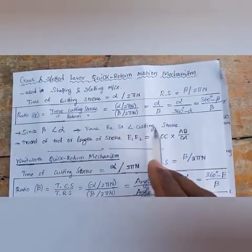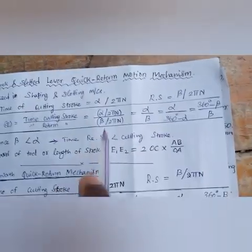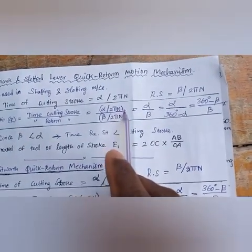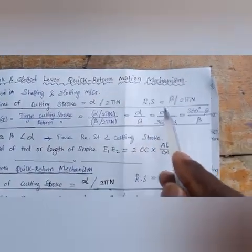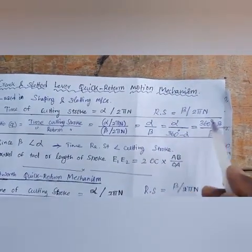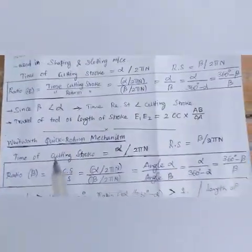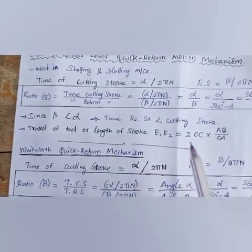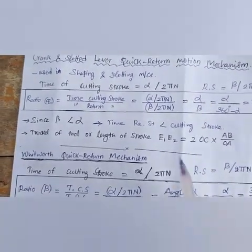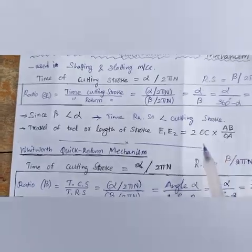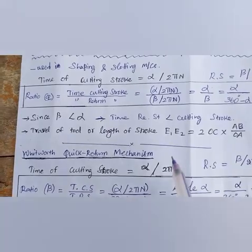The ratio of time of cutting stroke to time of return stroke equals alpha divided by beta. Also, alpha divided by (360° minus alpha) equals (360° minus beta) divided by beta. The length of stroke (travel of tool) E1E2 equals 2 × OC × AB divided by OA. For the Whitworth quick return mechanism, the same stroke length formula applies.